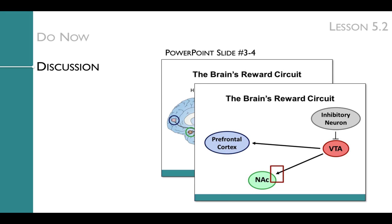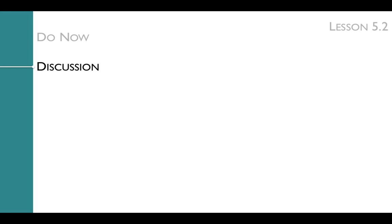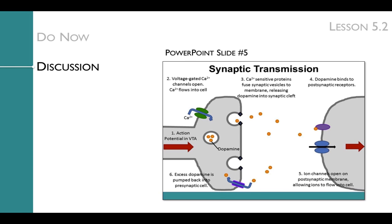Slide 4 also allows you to discuss the fact that the VTA receives projections from many areas of the brain, and some of those connections are inhibitory, represented here with a gray circle and inhibitory connection. After reviewing the reward pathway, you'll use slide 5 to review the process of synaptic transmission. This slide is animated so you can review each step in the process one at a time. This slide also lets you introduce the fact that the VTA uses the neurotransmitter dopamine to signal to the nucleus accumbens.